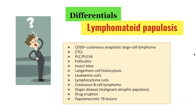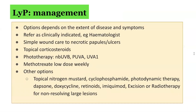The differentials for LYP are listed, though not exhaustively. In terms of management, current options are often unsatisfactory and not definitive. Since curative therapy is not available and no treatment modality affects the natural course of disease, short-term benefits of active treatment should be balanced carefully against potential side effects. Simple wound care should be performed for necrotic papules and ulcers. Topical therapies include corticosteroids; phototherapy options include narrowband UVB and UVA. Low-dose weekly methotrexate is also an option. Other reported options include topical nitrogen mustard, cyclophosphamide, photodynamic therapy, dapsone, doxycycline, retinoids, imiquimod, and excision or radiation therapy for non-resolving large lesions.